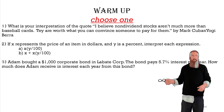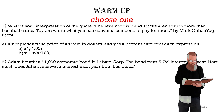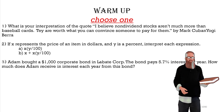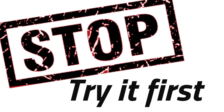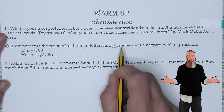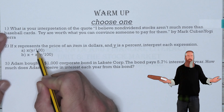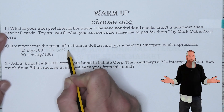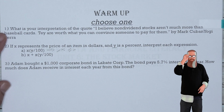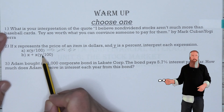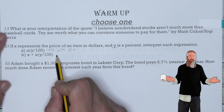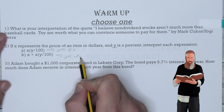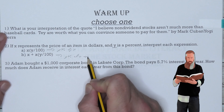Before we get into it, let's take a look at warm-up number two. If X represents the price of an item in dollars and Y is a percent, interpret each expression. Since Y is a percent, dividing it by 100 turns it into a decimal, so this means it is Y percent of X. And if we're adding X to it, then we have Y percent of X plus X.